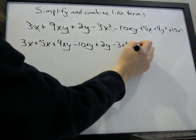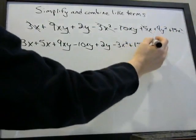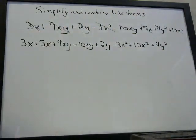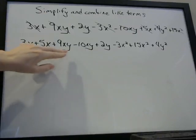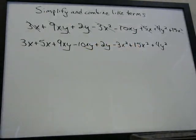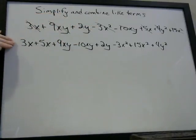Next is 15x squared — let's put that next to the minus 3x squared. And plus 4y squared. So we took our original expression and we've just rewritten it so that like terms are next to each other, to make it easier to simplify. Cross them out as you rewrite them so you know what you have and don't double count something.